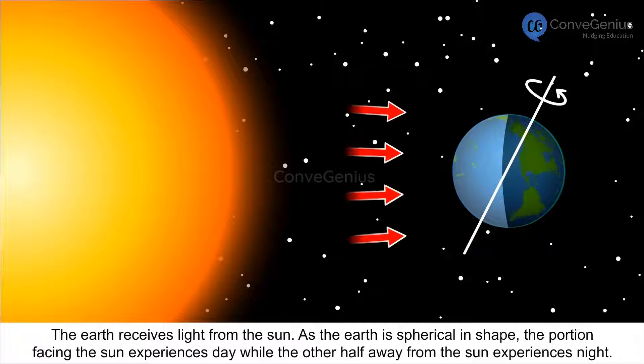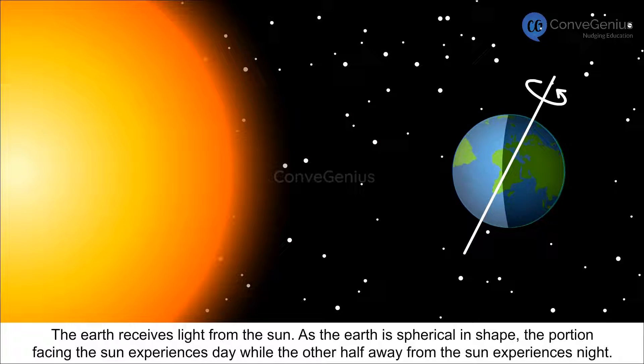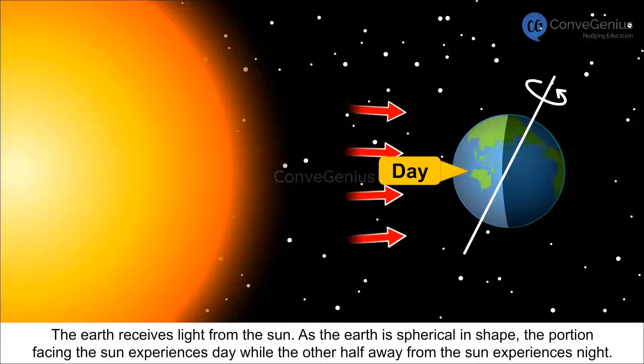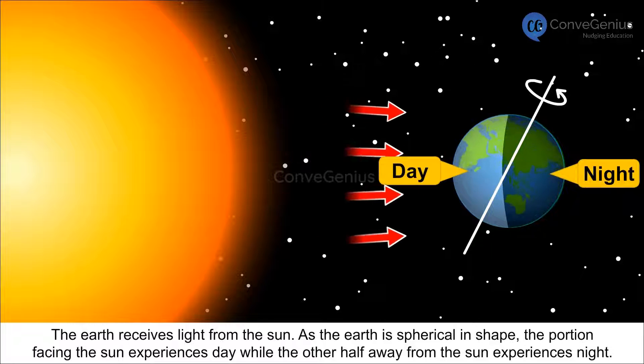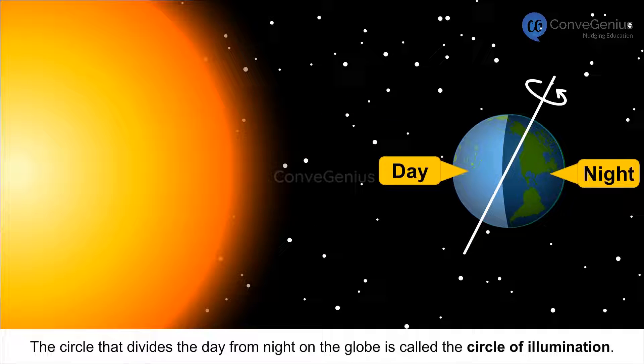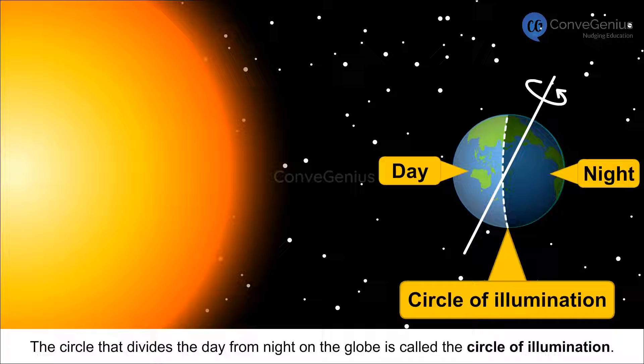As the Earth is spherical in shape, the portion facing the Sun experiences day while the other half away from the Sun experiences night. The circle that divides the day from night on the globe is called the circle of illumination.